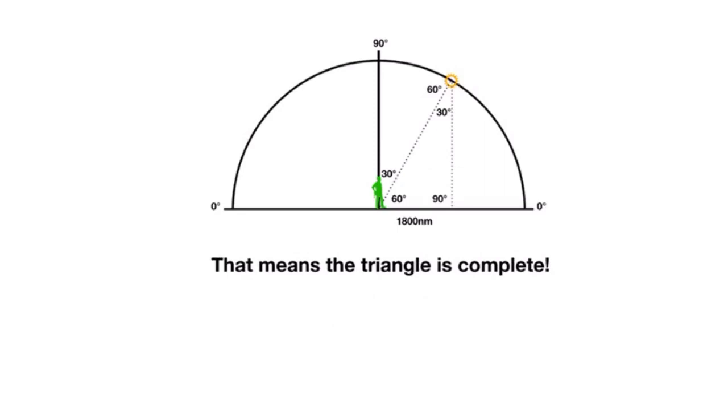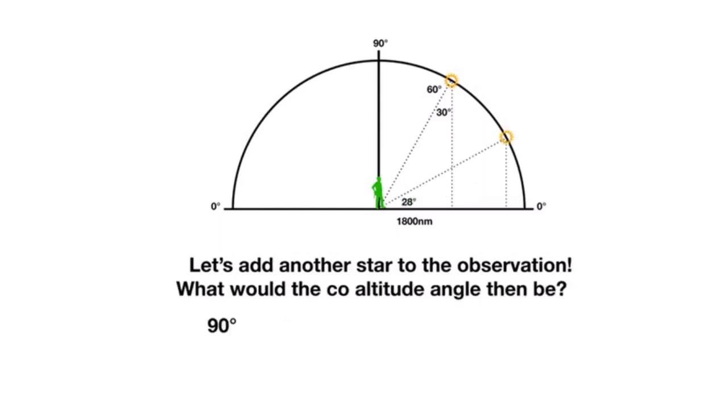This means the triangle is complete. Let's add another star to the observation, star 2. What would the co-altitude angle then be? Let's take it again. He measured 28 degrees to the star. He is at 90 degrees. You minus your 28 degrees and you get 62 degrees. Great. Now we know the co-altitude angle. How are we going to get the distance? 62 degrees, which is the co-altitude angle, times 60 minutes of arc, which gives us 3,720 nautical miles. That would be his distance to star 2.